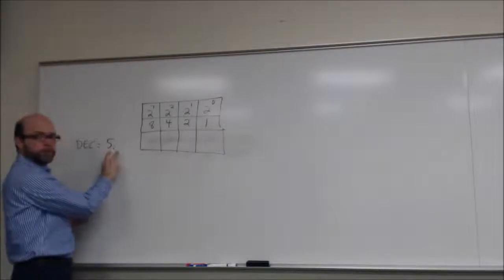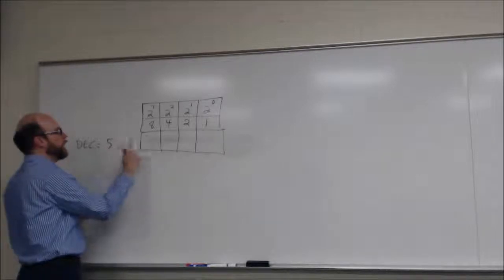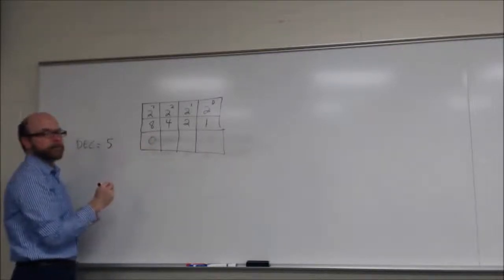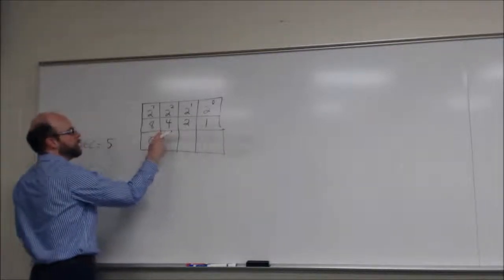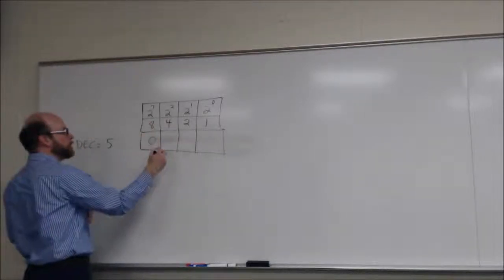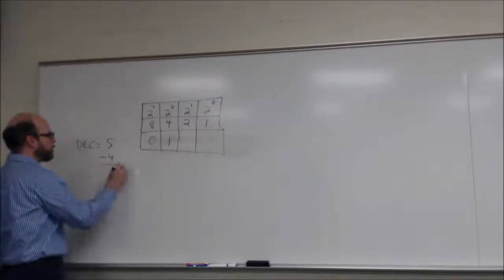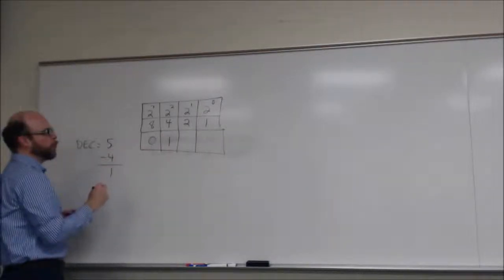If the answer is no, which in this case it is, eight is not less than or equal to five, then we put a zero there. So we go to the next bit place. Is four less than or equal to five? The answer is yes. So we put a one, and then we subtract four, and that gives us one.